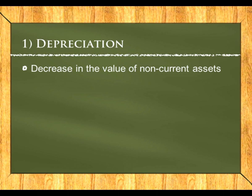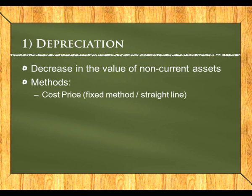Depreciation is written off to show a decrease in the value of non-current assets. In accounting terms it allows us to spread the cost of an asset across different accounting periods, so we don't write off all the cost against one year's profit. We use two methods: the cost price method, also called the straight-line or fixed method.